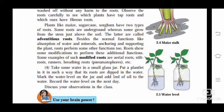If you see the maize stalk in figure 2.4, you will see fibrous roots at the bottom. Plants like maize, sugarcane, and sorghum have two types of roots. Some roots are underground, whereas some grow from the stem just above the soil. Some roots go deep underground and some remain outside the soil. The latter are called adventitious roots.